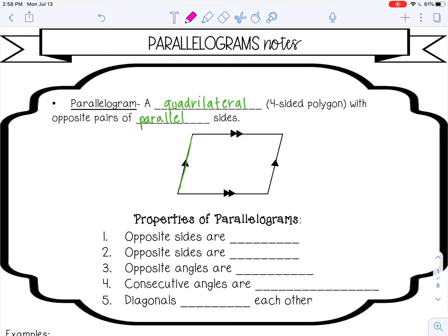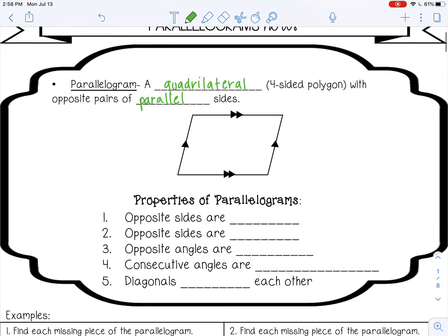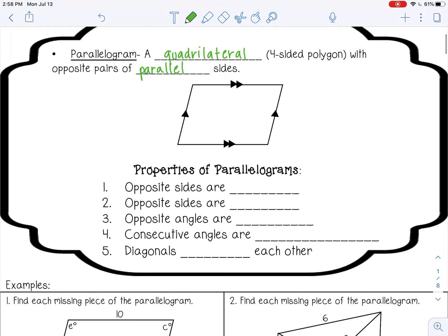Parallelograms have five different properties that we need to learn, so let's go over those. The first one we've already talked about: opposite sides are parallel. That's why it's called a parallelogram, of course.